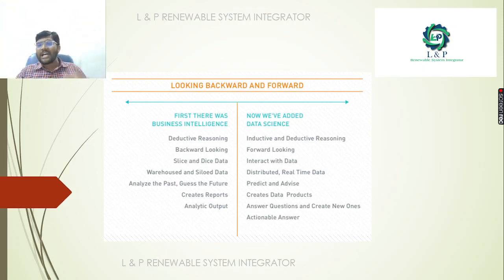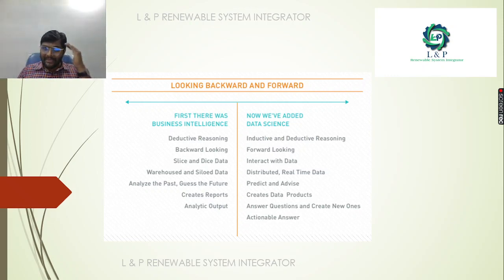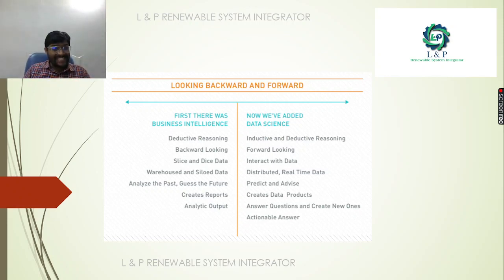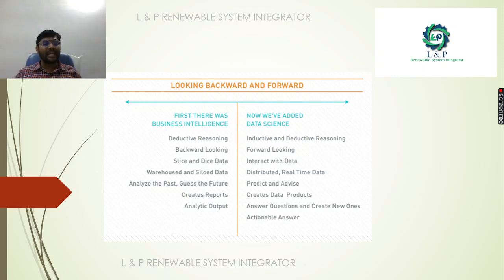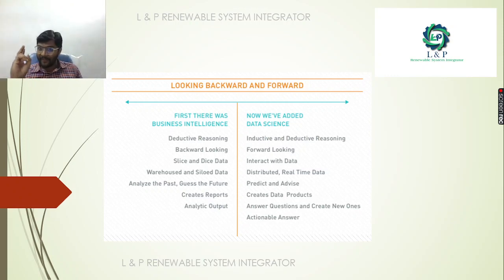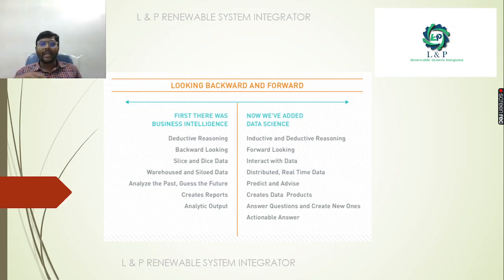Looking backward and forward: before the invention of data science, business intelligence was used. For business intelligence we were using deductive reasoning — backward-looking, slice-and-dice, data warehouse, analyzing the past to predict the future, creating reports and analytical outputs. Whereas in data science we use inductive as well as deductive reasoning — forward-looking, interacting with distributed and real-time data to predict and address issues.